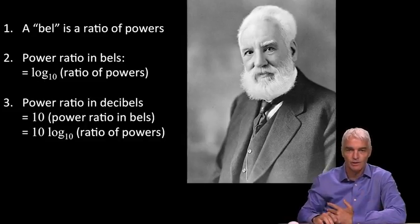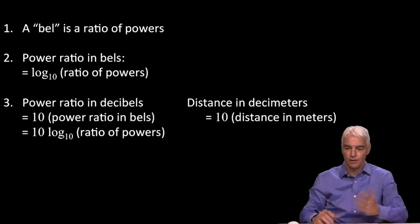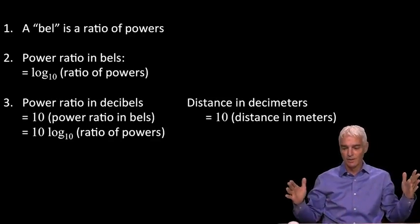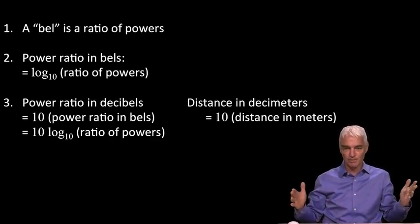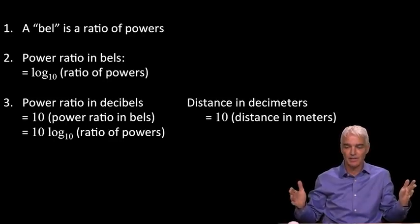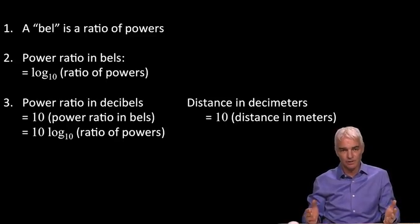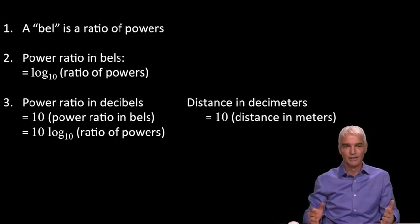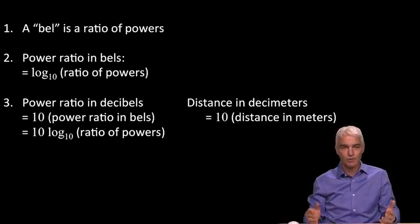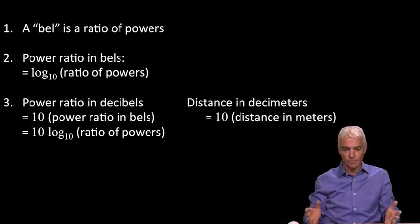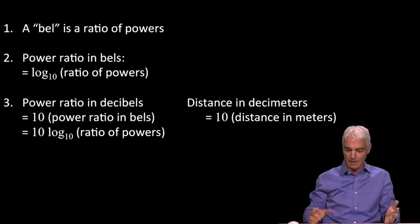So, what's a decibel? Well, think of a decimeter. If you've got a distance of one meter, how many decimeters in there? 10. Just 10 times as many decimeters as meters. Same for decibels. Decibels is just 10 times as many of those as they are bells. So, power ratio in decibels is 10 times the power ratio in bells, which is 10log₁₀ of a ratio of powers. Simple as that. So, you should never get confused again about this.